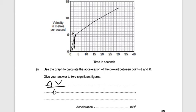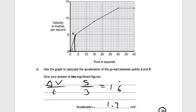Drawing a line down on the graph, the change in velocity goes from 0 to 5, and we divide that by our time of 3. So 5 divided by 3 gives 1.6 recurring. Rounding to two significant figures gives 1.7 meters per second squared, for two marks.